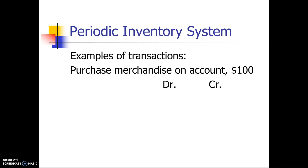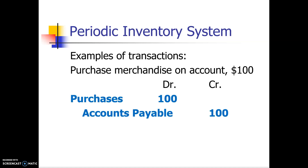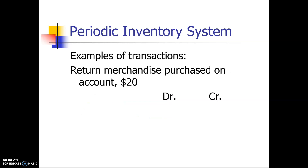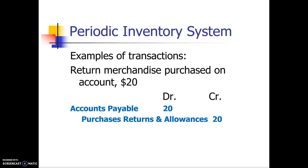When we purchase merchandise on account, we are not going to debit merchandise inventory. We're going to debit an account called purchases. So we'll debit purchases and credit accounts payable. When we return merchandise that we purchased on account, we'll debit accounts payable. The credit will not be to merchandise inventory — it will be to purchases returns and allowances, which is a contra account to purchases and gets subtracted from the purchases account.